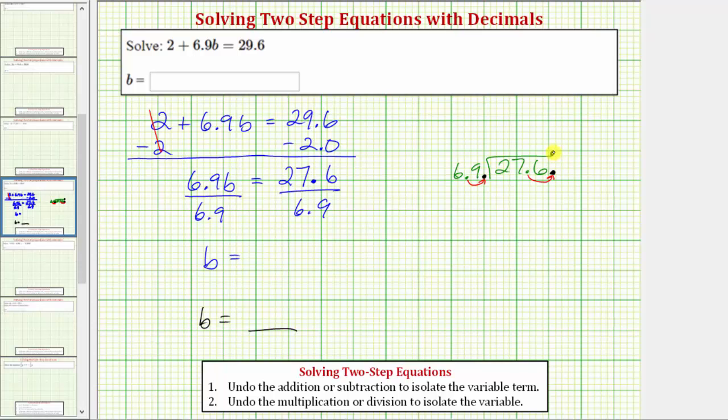Move the decimal point up into the quotient and divide like we normally do. So we need to determine how many 69's there are in 276. That's not an easy question. So what we could do is round 69 to 70 and round 276 to 280. And we can use this to estimate how many 69's there are in 276. And because 4 times 70 is exactly 280, we'll assume there are 4 69's in 276.